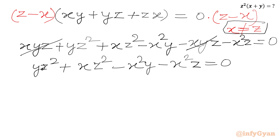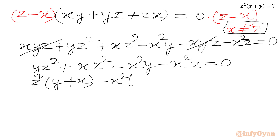Now we take z squared common from the first two terms, giving z squared times y plus x in the bracket. From the last two terms we take minus x squared common, giving minus x squared times y plus z equal to 0.